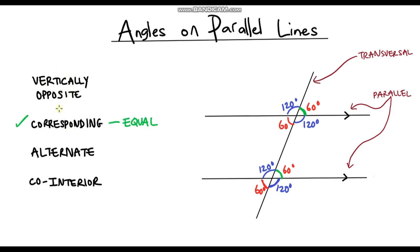Now let's take a look at vertically opposite angles. When we're talking about vertically opposite angles, take this 60 degree angle — the one over here is vertically opposite. You can see that these two angles are opposite one another, and vertically opposite angles are also equal.